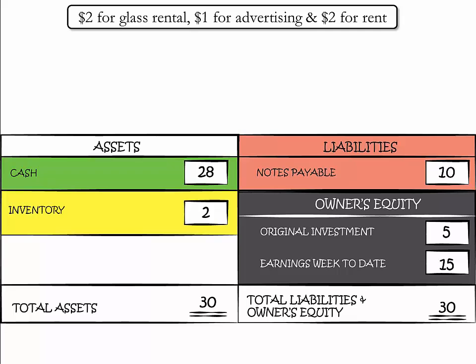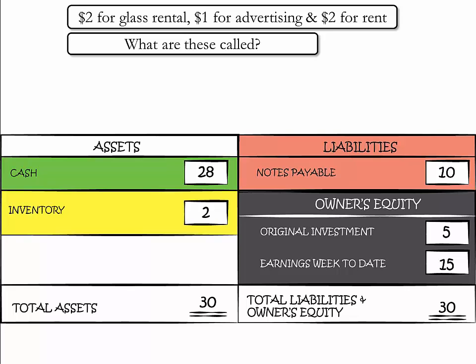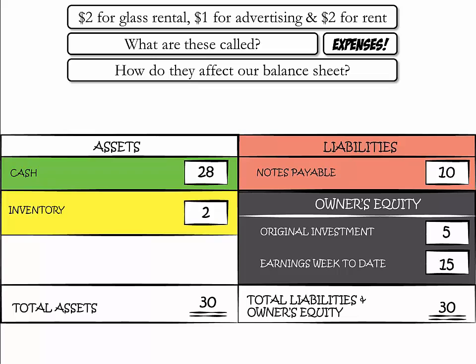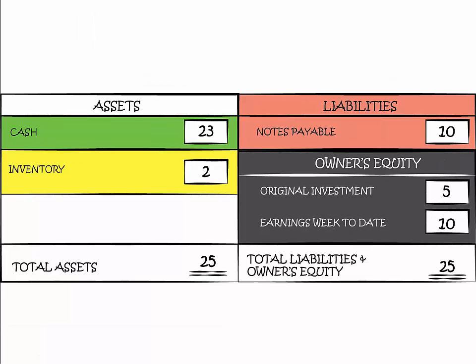Let's update our balance sheet with this new information. You had to pay $2 to rent the glasses from your parents, $1 in advertising for the sign, and $2 to rent the corner location. We call these items expenses. These expenses affect our balance sheet through cash and earnings — meaning less money in the pocket after all business expenses have been paid. Because of our expenses, which total $5, our cash has gone down from $28 to $23, and our earnings week-to-date have gone down from $15 to $10.